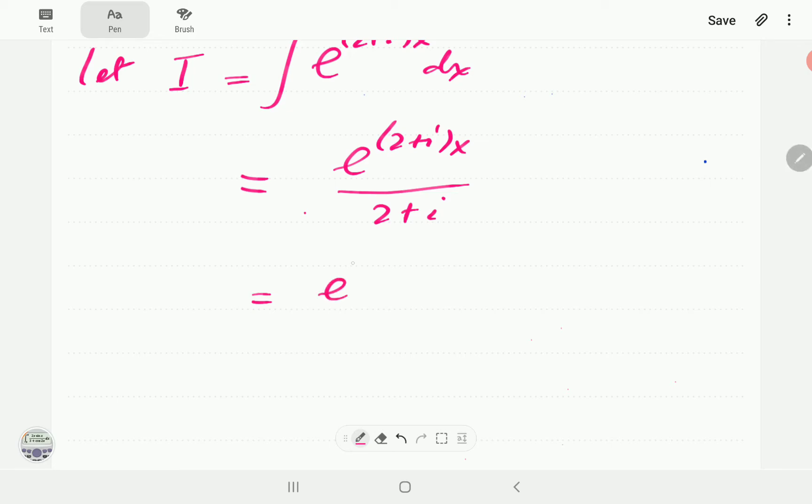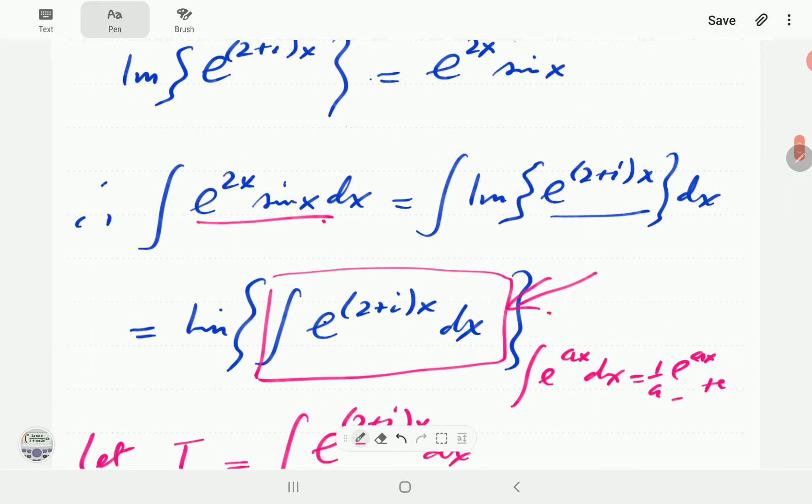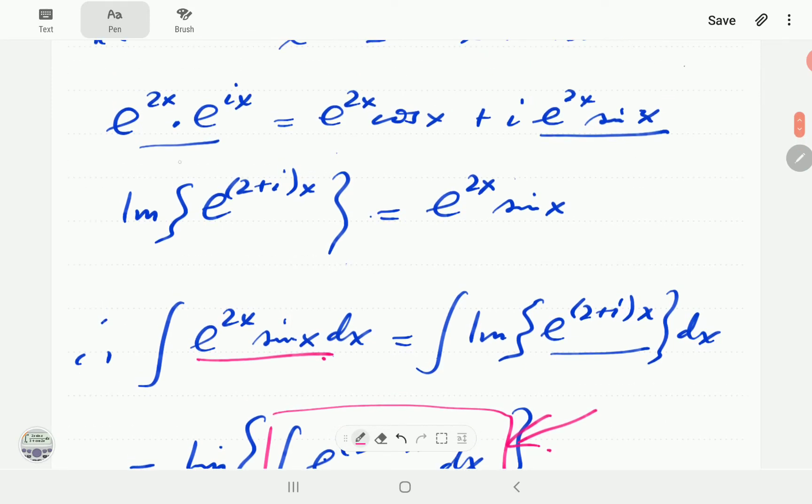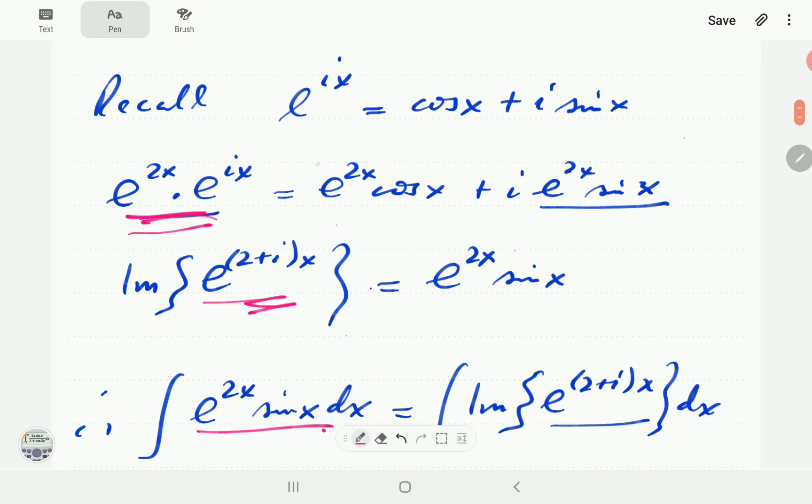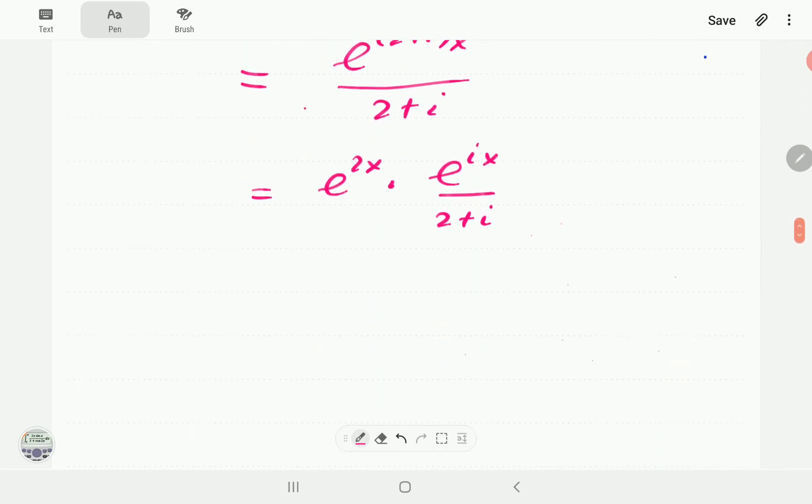If we write this again in this form e to the 2x e to the ix, we're just tracing our steps back. So remember we had this and then we decided to write like that.